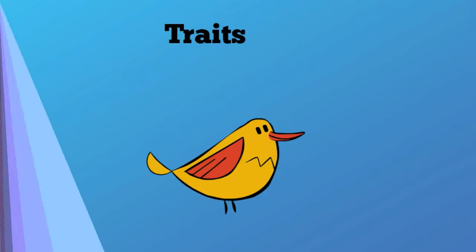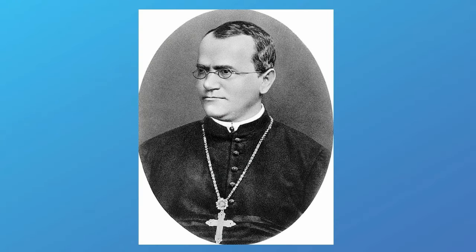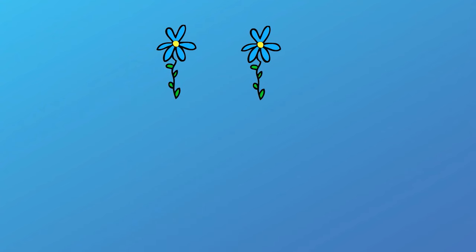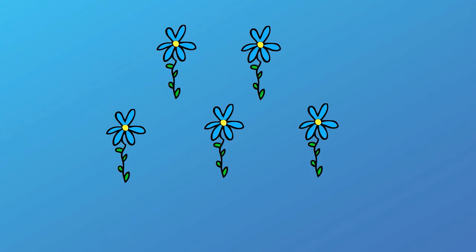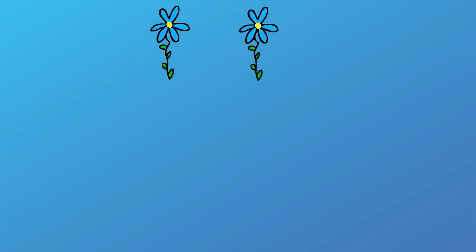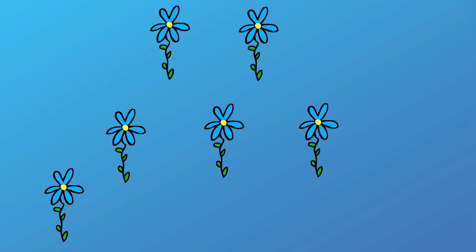In the 1800s, while growing pea plants, Gregor Mendel noticed that some traits like the height of the plant may change from one generation to the next. For example, if he bred two tall plants together, in the first generation he would get tall plants. However, in the second generation, he may get three tall plants and one short plant.